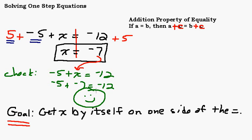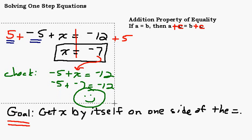In the last video, we introduced solving one-step equations, and we talked about the addition property of equality — adding something to both sides of an equation to get x by itself. In this video, we're going to continue our discussion of solving one-step equations and look at another very important property.